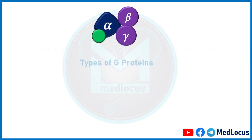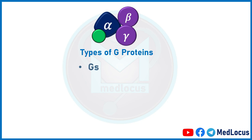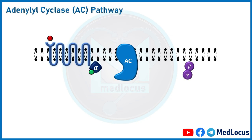The alpha-GTP fragment combines with effector enzymes like adenylyl cyclase or cAMP and phospholipase C, and activates them. The beta-gamma dimer mainly binds to ion channels and kinases and activates them. There are four types of pharmacologically active G-proteins: Gs (stimulatory), Gi (inhibitory), G12/13, and Gq.